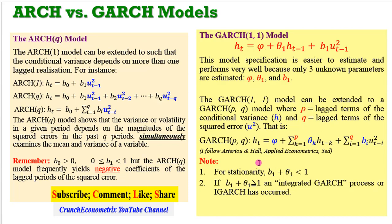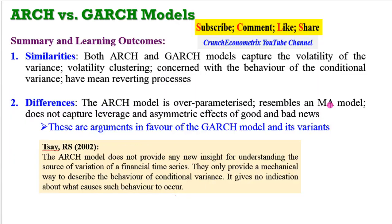Given a GARCH(1,1) model, some conditions must hold. The coefficients of the ARCH term and the GARCH term — beta-1 and theta-1 — when summed together, must be less than 1 for the stationarity condition to hold. If both of them sum up to be greater than 1, then you have an integrated GARCH process, or what is known as an I-GARCH process. So whenever you estimate your model, sum up the coefficients of the ARCH and GARCH terms to see whether they are more than 1 or less than 1.